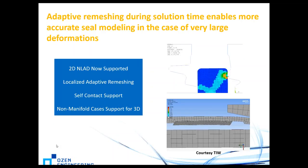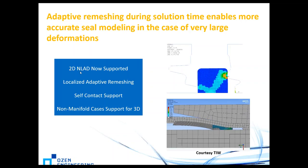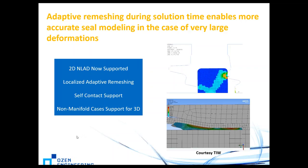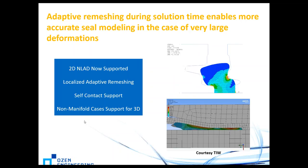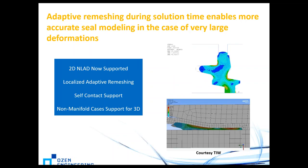An example of the NLAD adaptive remeshing during solution is shown — this is actually a seal modeling example. You can see how the mesh is redefined due to excessive distortions and how ANSYS automatically remeshes. There are a lot of nonlinear features here: nonlinear contacts, nonlinear wear, and nonlinear adaptive remeshing, all of which kick in to do proper wear calculations.